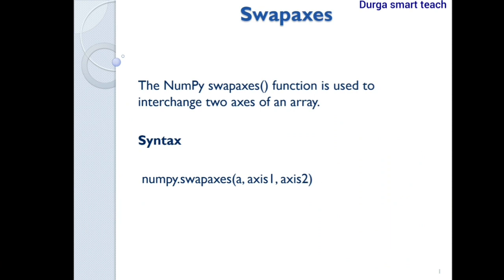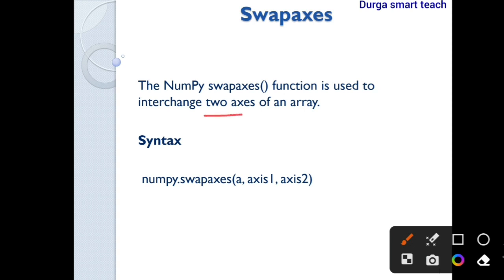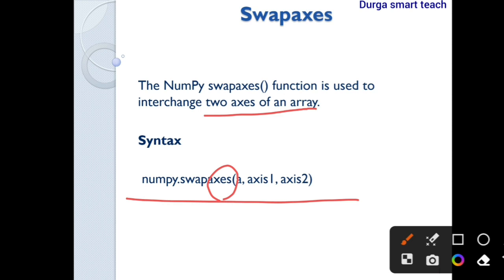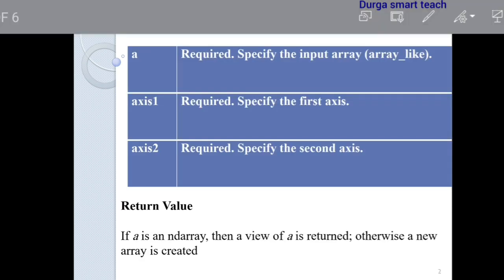The swap axis function is used to interchange only two axes of an array, unlike transpose which reverses all axes. NumPy provides this as a built-in function: numpy.swapaxes. It takes three parameters — the array name, axis one, and axis two — allowing you to swap only those two specified axes.